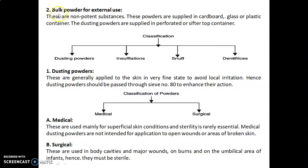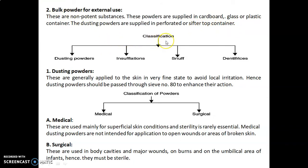Second, bulk powder for external use. These are non-potent substances. These powders are supplied in cardboard, glass, or plastic containers. Dusting powders are supplied in a perforated or sifter-top container. The classification of bulk powder for external use includes: dusting powder, insufflations, snuffs, and dentifrices.